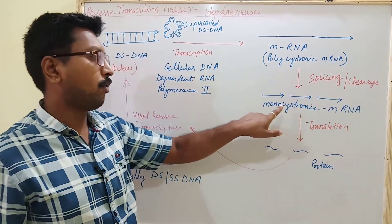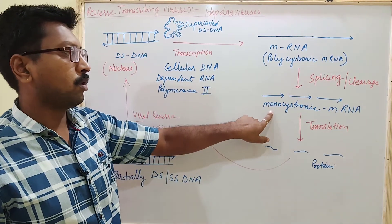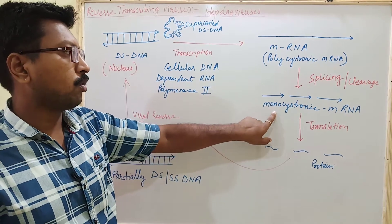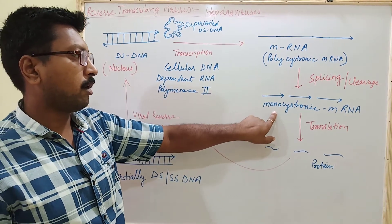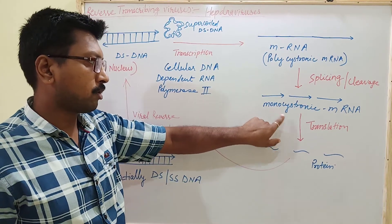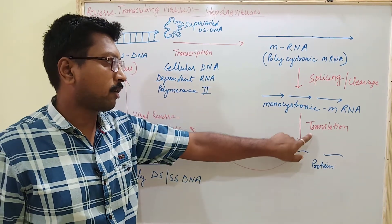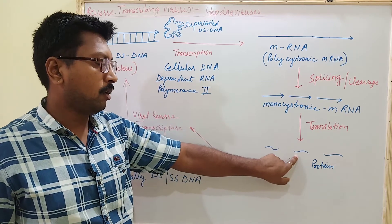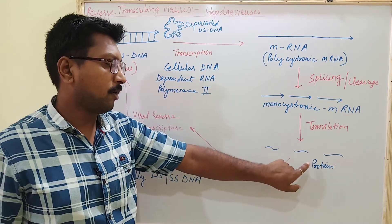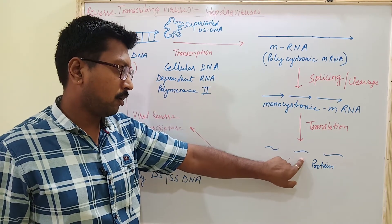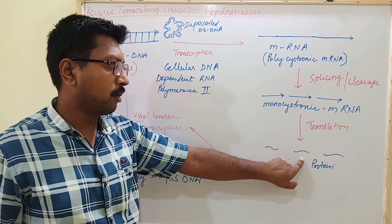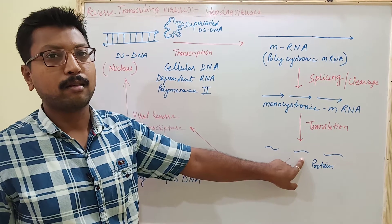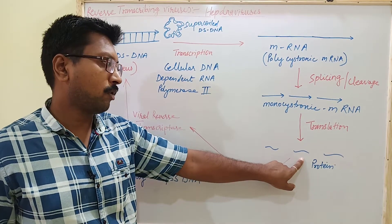Further, the mRNA undergoes splicing and cleavage and forms monocistronic mRNA. This monocistronic mRNA undergoes translation and forms proteins — different types of proteins, including some structural and non-structural proteins.